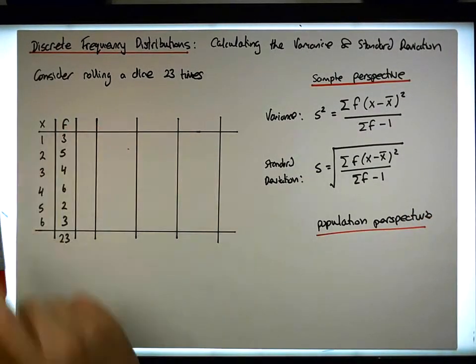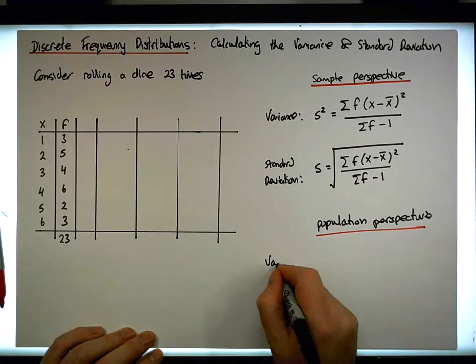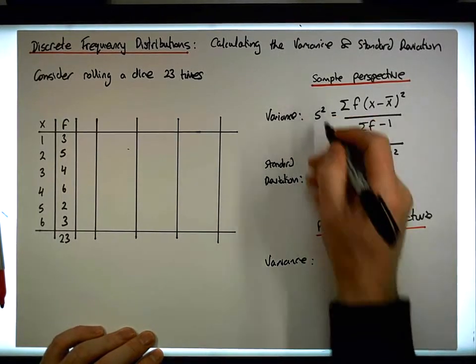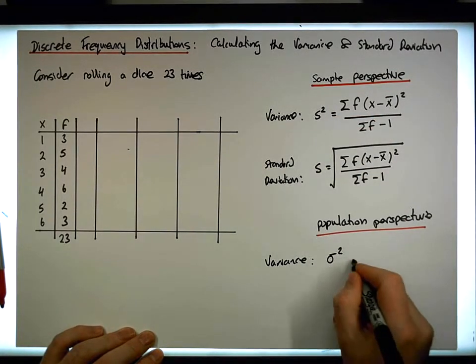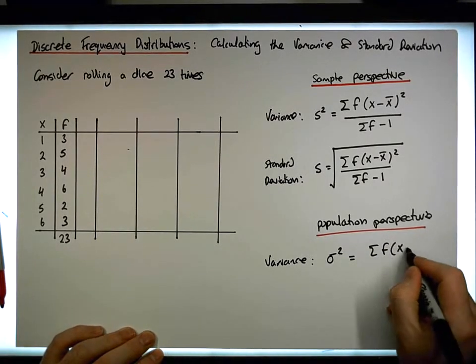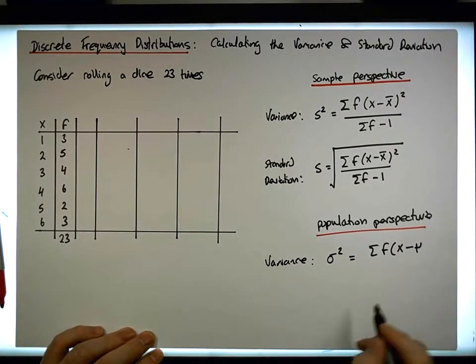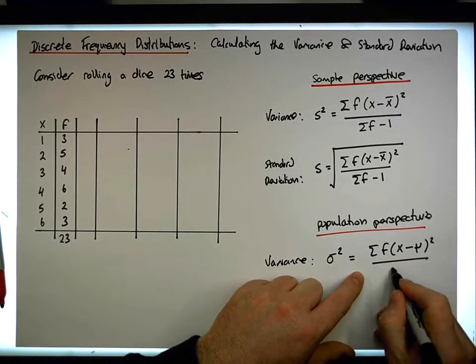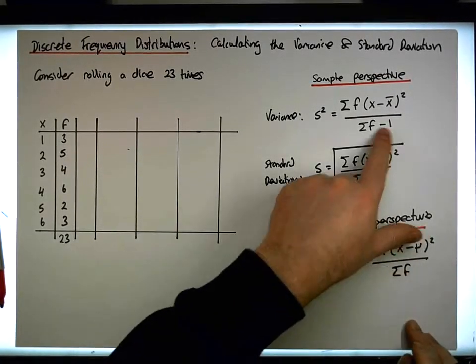So we can also calculate the variance. And the variance, the formula for the variance, is quite similar to this formula here. The symbol that we use is sigma squared. And it's equal to the sum of the frequencies times the observations minus their mean value, mu in this case because it's population data, squared. But this time, just divided by the sum of the frequencies, we don't take away one.